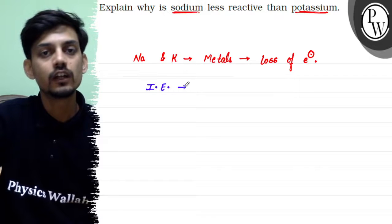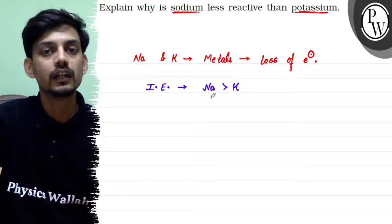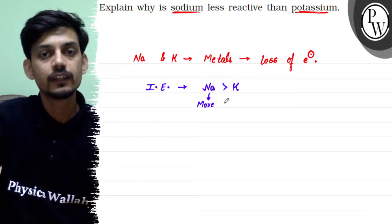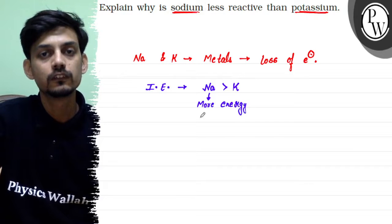Down the group, ionization enthalpy decrease hoti hai. That means the ionization enthalpy of sodium is higher than potassium. Yani sodium se electron nikaalne ke liya humein zyada energy chahiye as compared to potassium.